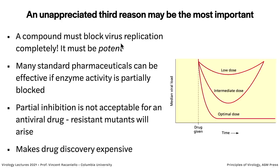A third reason is that a compound has to block replication completely — it has to be potent. This is unlike standard pharmaceuticals for a headache or muscle ache, which don't need 100% inhibition. Partial inhibition is not acceptable for viruses because you'll get resistance right away. As illustrated: the optimal dose will completely inhibit virus reproduction, but intermediate or low doses will allow selection of resistant variants. This is why we don't really have any SARS-CoV-2 antivirals — it's hard to do and takes time.